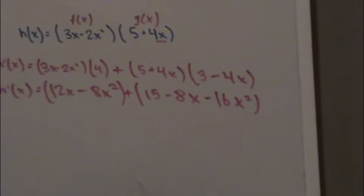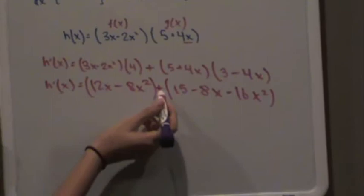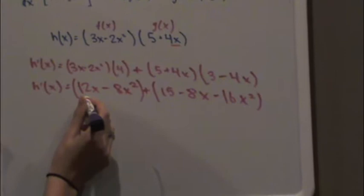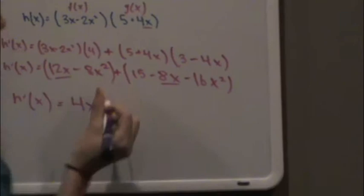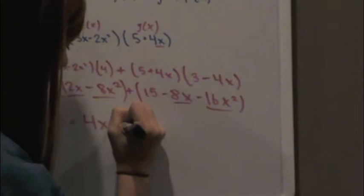Now, you can combine like terms, and remember to distribute this positive to these. You can add 12x to negative 8x, so that comes out to be 4x. Then, if you combine negative 8x squared and negative 16x squared, it's negative 24x squared.